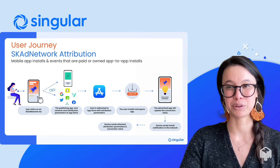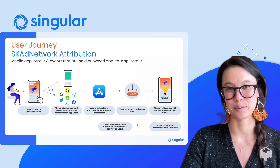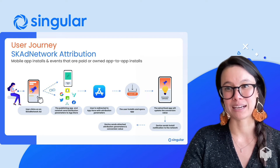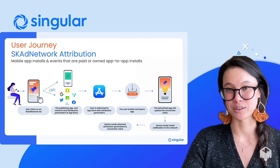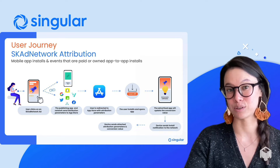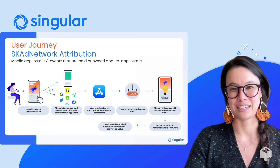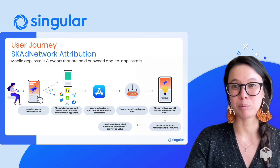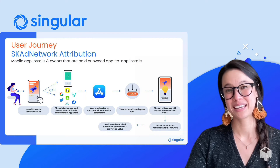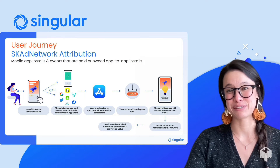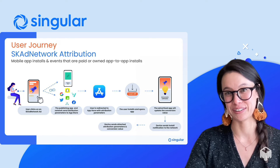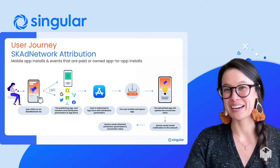Now let's look at how we can attribute the user journey within SKAdNetwork's framework. For context, SKAdNetwork applies to all paid or owned app-to-app installs and events, regardless of whether ATT consent is received. If the user does end up giving ATT consent, the MMP will be able to simultaneously run traditional attribution. There are quite a few distinct differences between the SKAdNetwork attribution flow and the flow we discussed earlier, so let's go ahead and dive in.